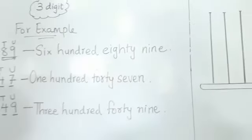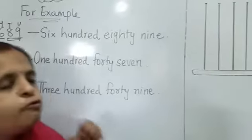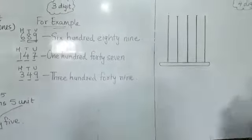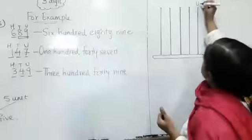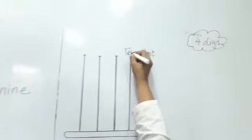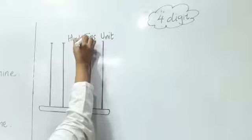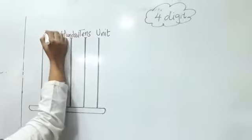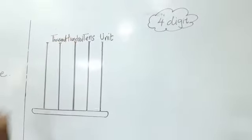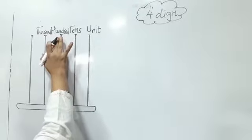Just like this, you have learnt three digit numbers in third standard. Now we will move on to four digit numbers. Four digit numbers means we have unit, tens, hundreds, and the next level is thousands. Unit, tens, hundred, thousand — this is the fourth place.